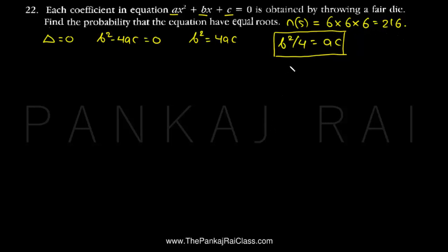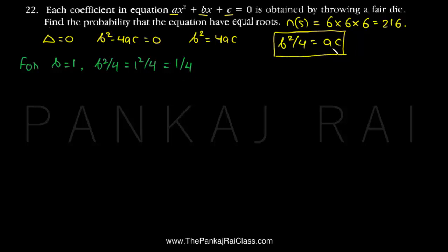We will take values of b one by one from 1 to 6 and see how many values of a and c satisfy b²/4 = ac. For b = 1, b²/4 = 1/4, which is a fraction. There is no value of a and c from 1 to 6 for which the product ac equals 1/4, so no valid combinations here.